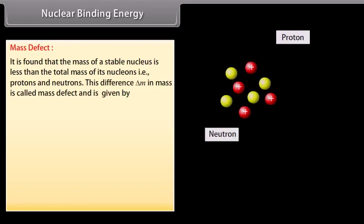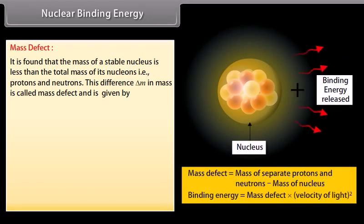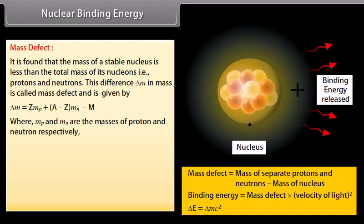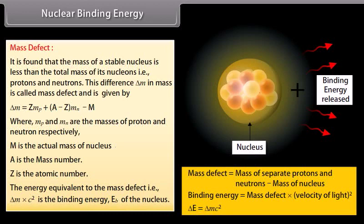Nuclear binding energy. Mass defect: it is found that the mass of a stable nucleus is less than the total mass of its nucleons, that is protons and neutrons. This difference ΔM in mass is called mass defect and is given by ΔM is equal to ZMₚ plus (A-Z) into Mₙ minus M, where Mₚ and Mₙ are the masses of proton and neutron respectively. M is the actual mass of nucleus, A is the mass number, Z is the atomic number. The energy equivalent to the mass defect, that is ΔM into c², is the binding energy Eᵦ of the nucleus.